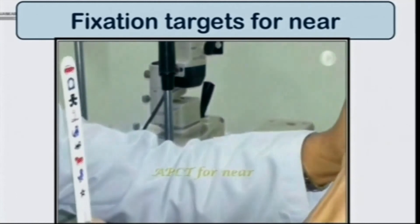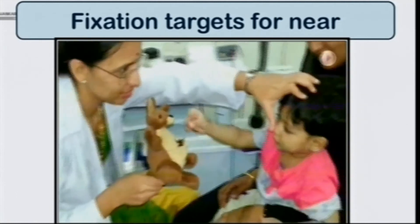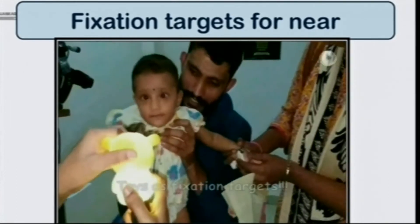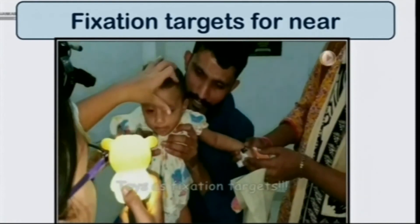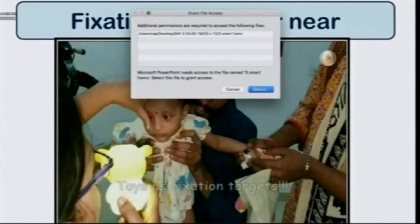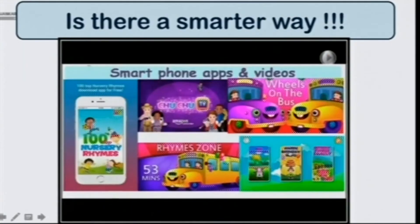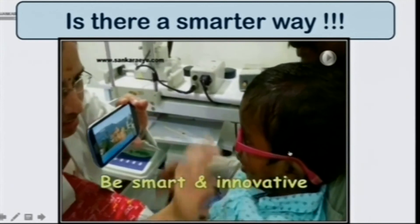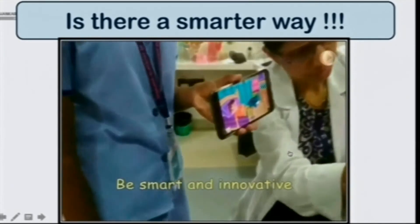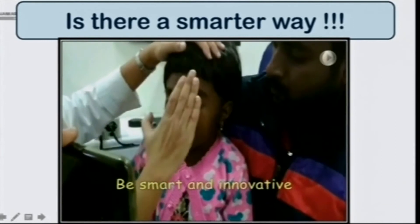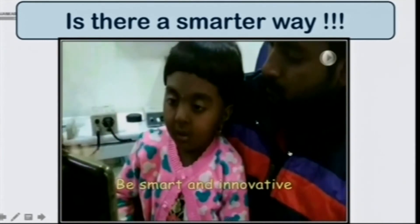The LANGS fixation stick has pictures on one end and number charts on the other, both of which can be used. In very young children, we could use squeaky toys, which come very handy — they make noise and can also be silenced to serve purely as a visual fixation target. Also, all of us have smartphones, and there are many apps with nursery rhymes that hold a child's attention very well and can act as an excellent fixation target.